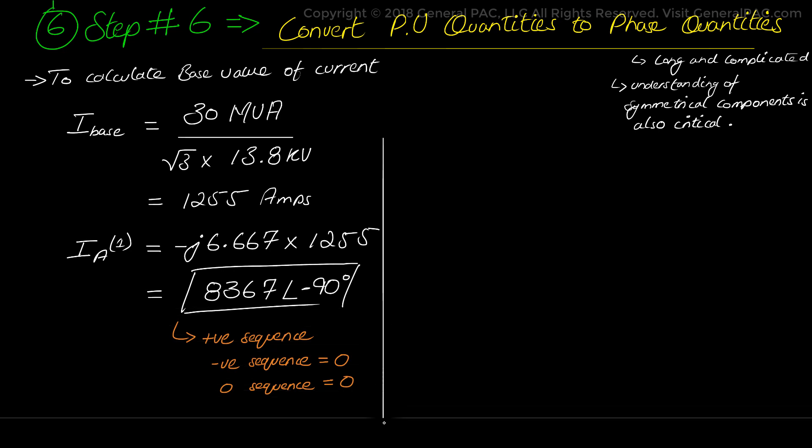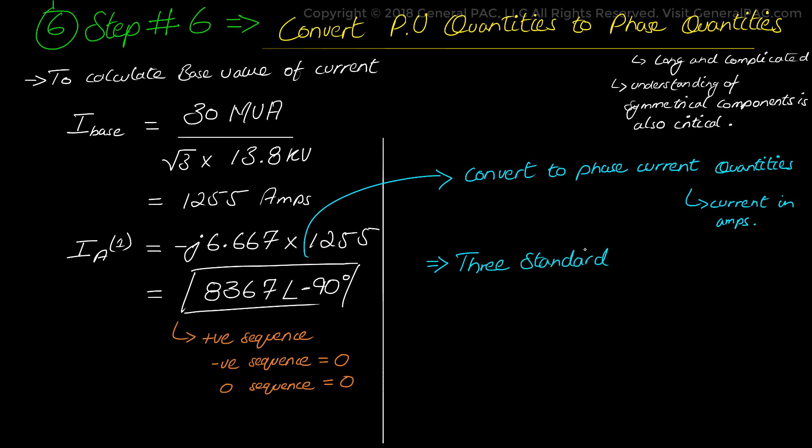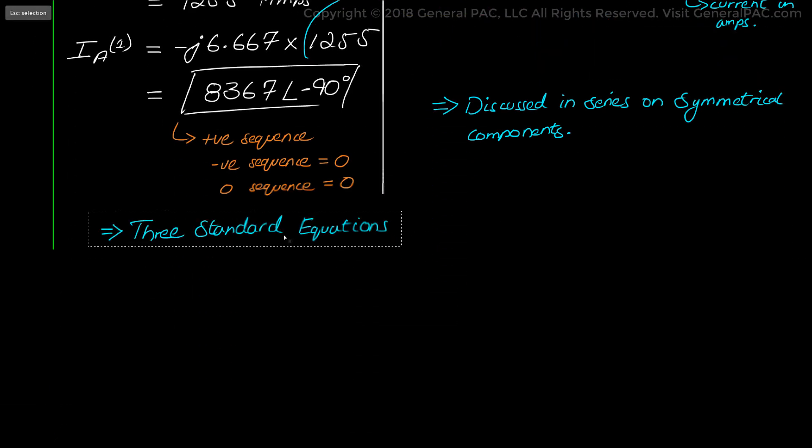Now in step number 6 we need to convert the sequence components into phase current quantities. These are currents in amperes that are actually flowing in line A, line B and line C in a 3 phase power system. To convert to phase current quantities we will use 3 standard equations that were derived from the phase values to sequence component transformation matrix. Now this was already discussed in the previous videos in the series on symmetrical components. So we're not going to delve into it too much here. But we quote the 3 equations as the following.